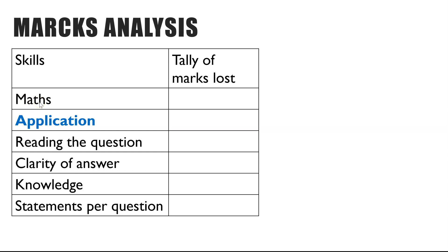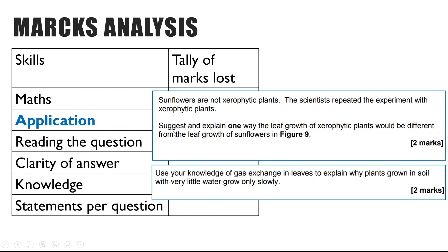Maths, for example, is if you got maths questions incorrect. Application might be slightly harder to identify - it's where you're given unknown information, or it could be an experiment where you have to suggest and explain, or use your own knowledge to explain something given in the question. So you're applying your knowledge to an unknown situation, and if you're losing marks on those questions you'd be tallying it in the second column.